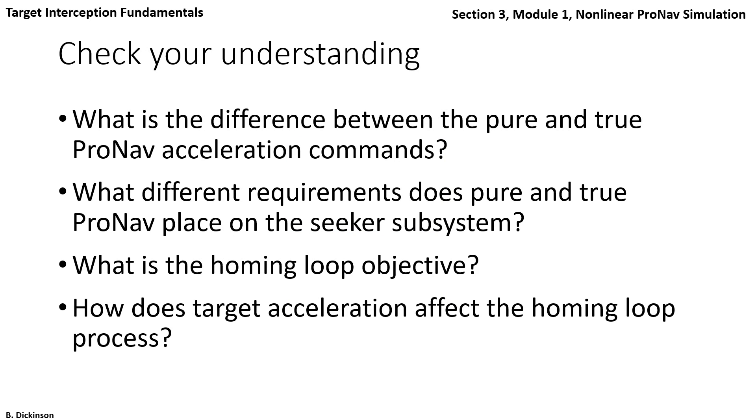So check your understanding about the homing loop. What's the difference between the pure and true proportional navigation acceleration commands? What different requirements does the pure and true PRONAV place on the seeker subsystem? Consider this from the vantage of an IR versus a radar seeker. What's the objective of the homing loop? And how does target acceleration affect the homing loop process?